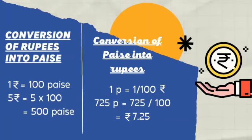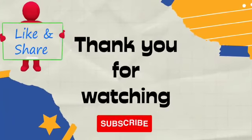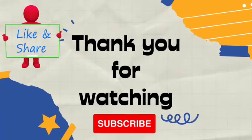Similarly, we can convert paisa into rupees. For example, 725 paisa is equal to rupees 7.25.